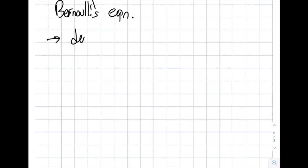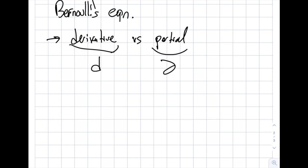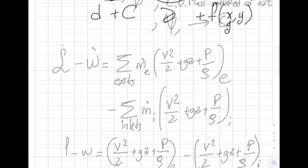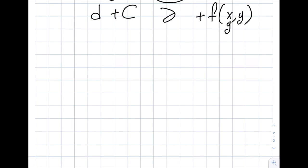A major source of mistakes in the differential forms involves integration constants. When taking the integral of a total derivative d, you get a constant +C. But when integrating a partial derivative with respect to one variable, you get a function of the other variable — for example, +f(y) or +f(x). I see students confusing derivation and integration more often here than in control volume or fluid statics problems. Please be very careful about this distinction.